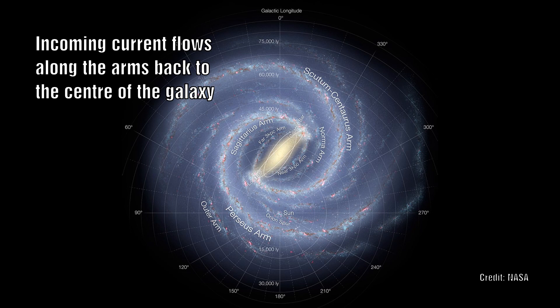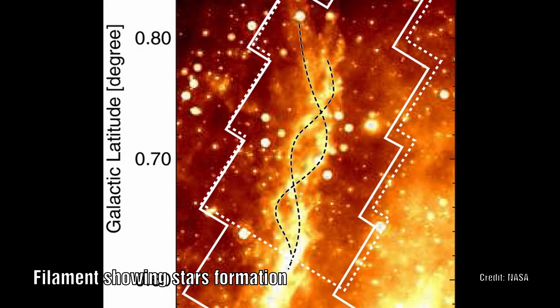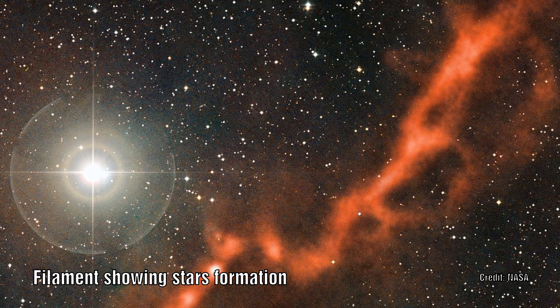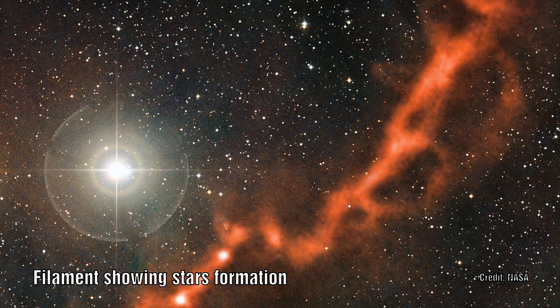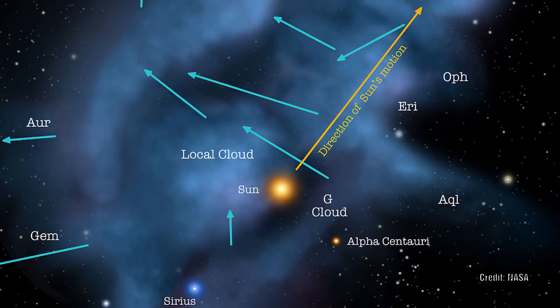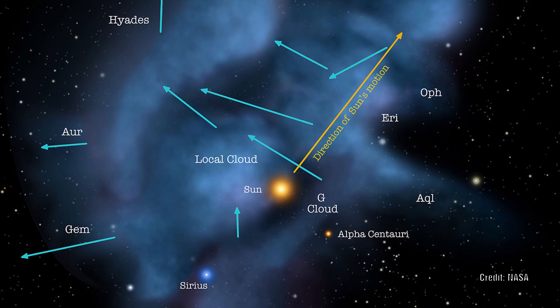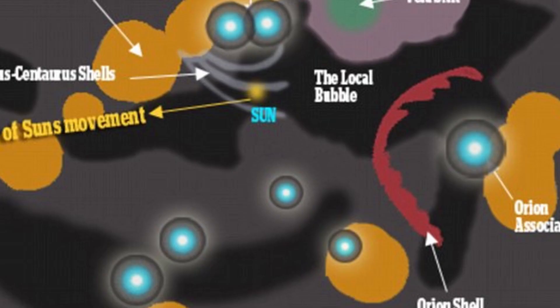We can readily see that stars do indeed form along these filament structures, and we also see that stars have a relative motion to this filament. There is evidence to suggest that there is an inward flow of the motion, but more work needs to be carried out to conclusively prove this point.